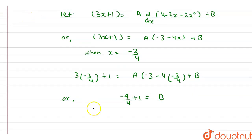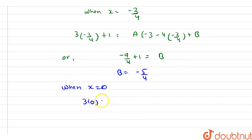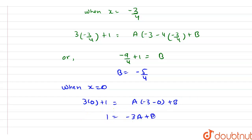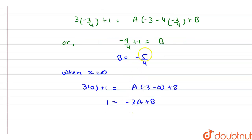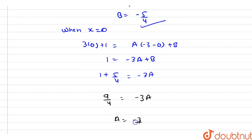From here our value of b is equal to minus 5 by 4. Now when x is equal to 0, in the left hand side we have 3 into 0 plus 1, and it is equal to a into (minus 3 minus 0) plus b. So we have 1 equal to minus 3a plus b. Substituting b = minus 5 by 4, we get 9 by 4 equal to minus 3a, so the value of a is minus 3 by 4.